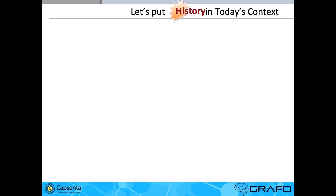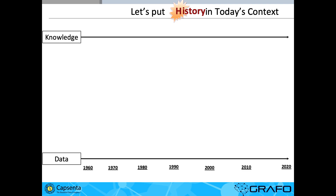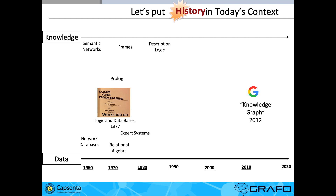Knowledge graph is this big thing. We talk about knowledge and data, and things have been going on for decades. Knowledge graph is a term that Google posted in a marketing blog seven years ago, but the history goes all the way back to semantic networks and network databases — graphs — back in the 60s. There's been all this bunch of events that have occurred over the last 60 years.